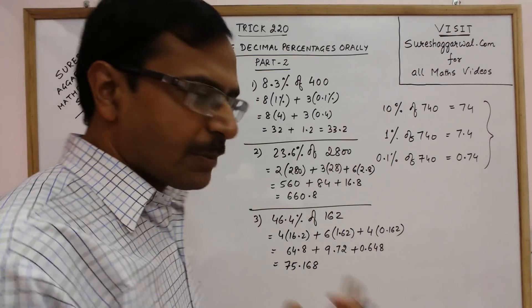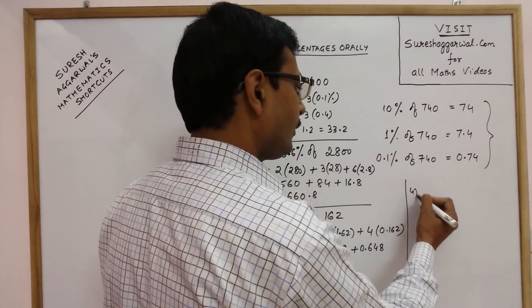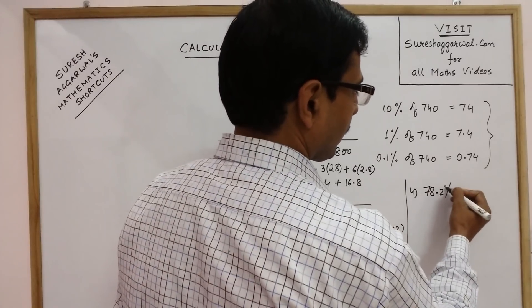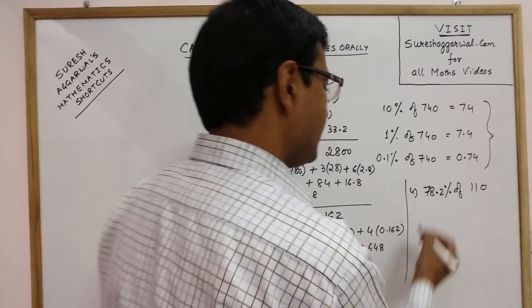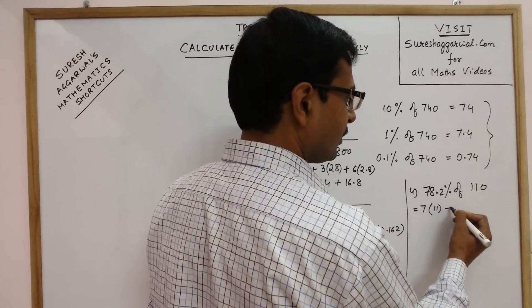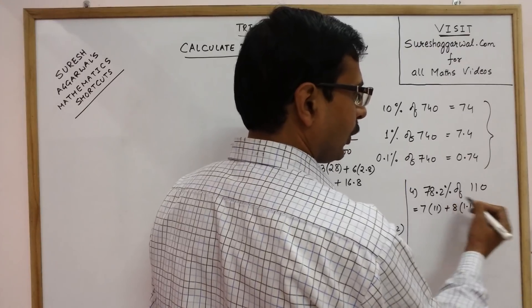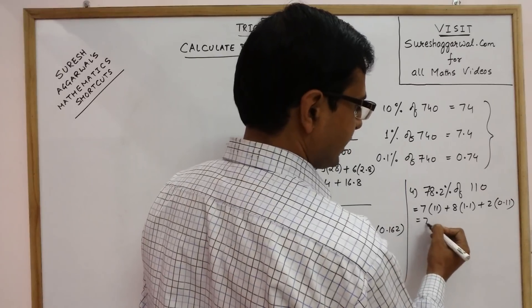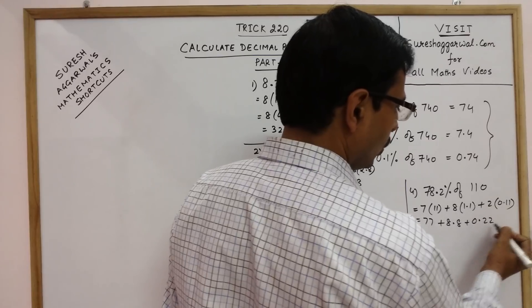Now you can extrapolate this method for some other questions also. Say we have, this time I am taking 78.2% of the number I am taking is 110. Now see, 78, 7 into 10%, 10% is 11. 8%, 8 into 1% is 1.1. And 0.2 means 2 into 0.1%. So 0.11.